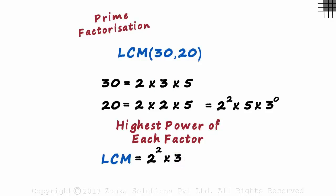And the last factor is 5. We have a 5 raised to 1 here as well as here. As both have the same power, we write it as is. This is 4 times 3 times 5 which equals 60.